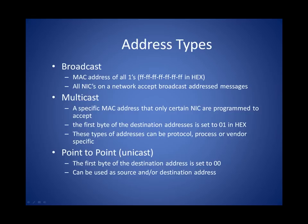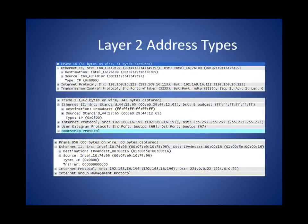All nodes have unicast MAC addresses, and they begin with 00. All source MAC addresses in Ethernet frames will be unicast. Here we have our three examples of the broadcast, unicast, and multicast frames. Starting at the top, we have our unicast frame and you can see that both the source and the destination MAC addresses begin with 00.